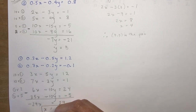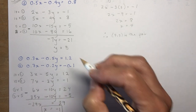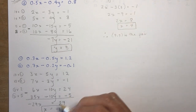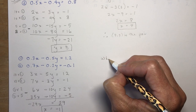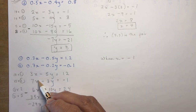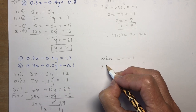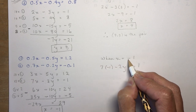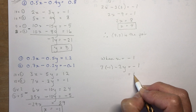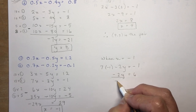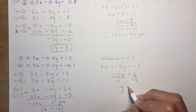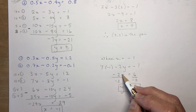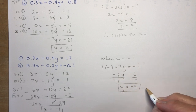It's a good idea to put a box around your answer — it helps your teacher see where you found your solution. Now plugging x equals minus 1 into the second equation: 7 times minus 1 minus 2y equals minus 1. That's minus 7 minus 2y equals minus 1. Adding 7 gives minus 2y equals 6, so y equals minus 3.